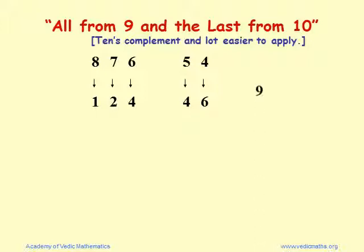Another example: the number 9 has only one digit, so it is both 'all from nine' and 'last from ten' — it is the last digit. So 9 from 10 is 1.